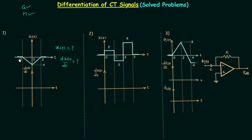In the first problem you can see the waveform, and we will start from the left side. From minus infinity to minus two, the signal is equal to zero — it is a constant value and the slope of the signal is zero, because for a constant the slope is going to be zero. From minus two to zero, the signal is having some slope.